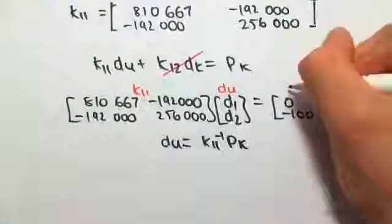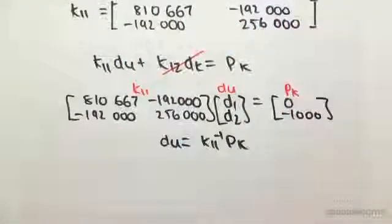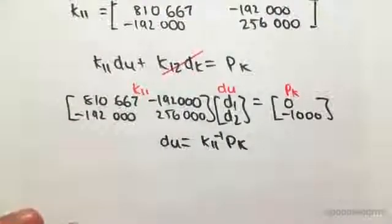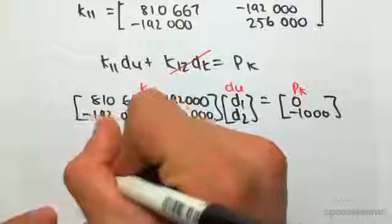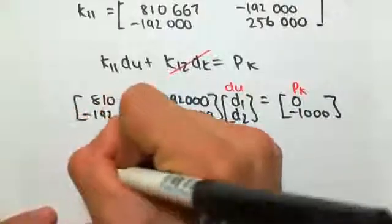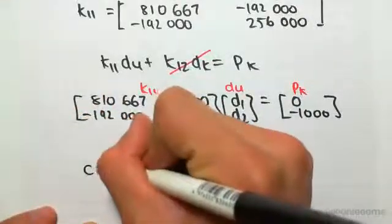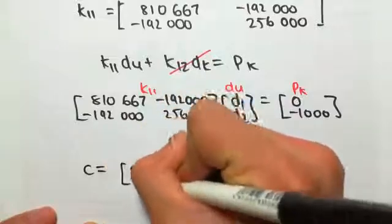Hopefully you guys remember how to do an inverse of a two by two matrix. If you say had a matrix, let's call it C, equaling [a b; c d], the inverse of C...